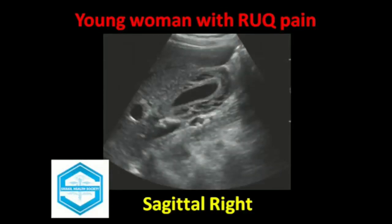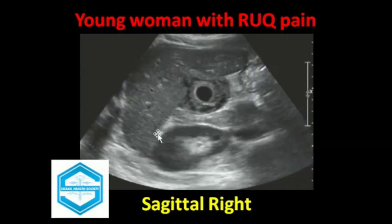This image belongs to a young woman of 30 years of age with localized pain in the right upper quadrant. On sagittal images, there is a thick-walled gallbladder with edema evident clearly on this image. The second image also shows the transverse section of the gallbladder, with an edematous thick-walled gallbladder surrounded by a very thin hypoechoic area suggestive of edema.